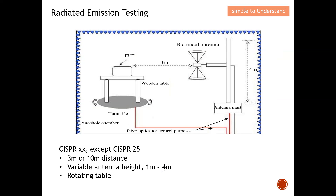The antenna has a variable height ranging from 1 meter to 4 meters. This is the antenna mast that controls the antenna height. The antenna can start at 1 meter, then move to 1.5 meters, 2 meters, 2.5 meters, and so on all the way up to 4 meters.